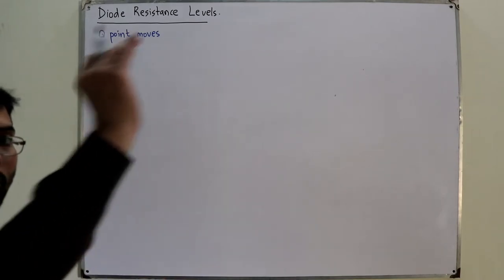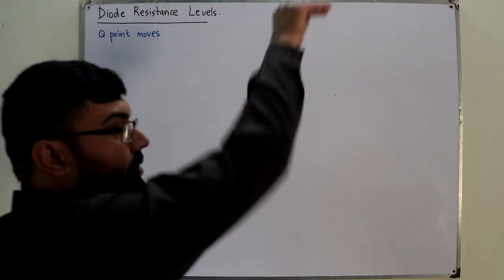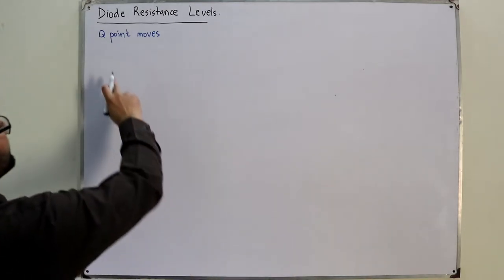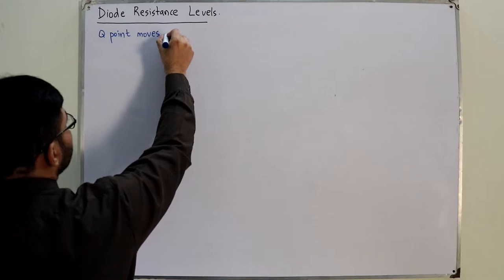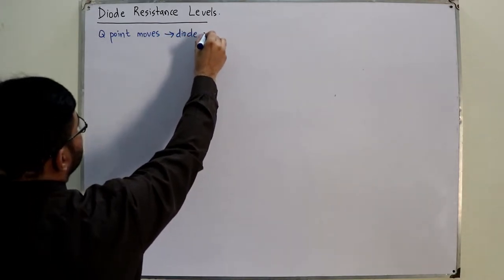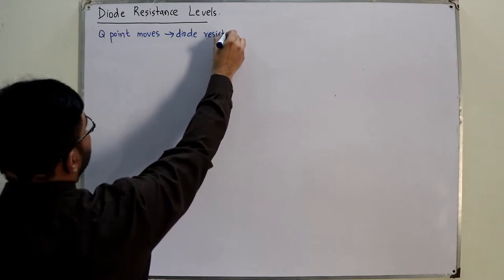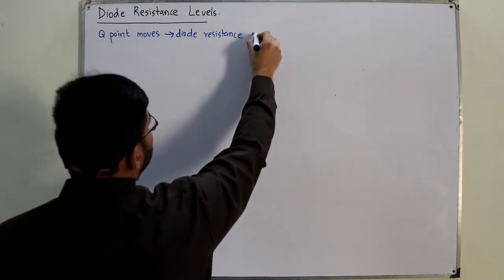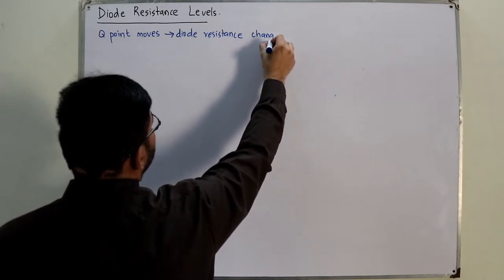This depends on the circuit - the Q-point could either go up or go down. So as the operating point moves, the diode resistance changes, which means the diode resistance has something to do with the Q-point.